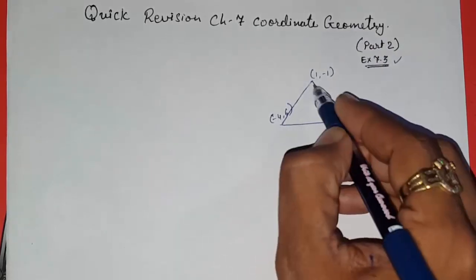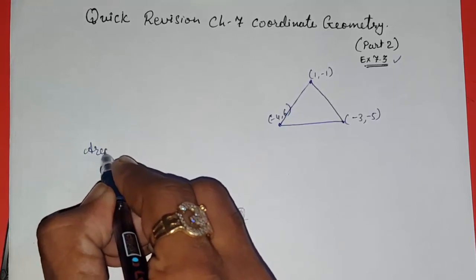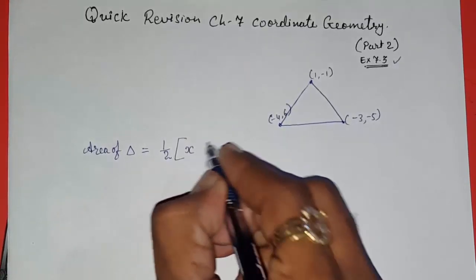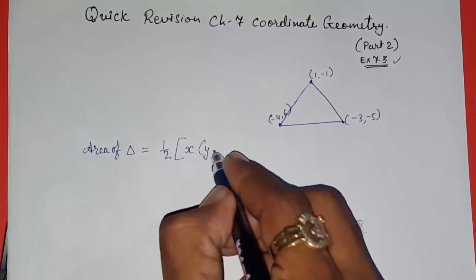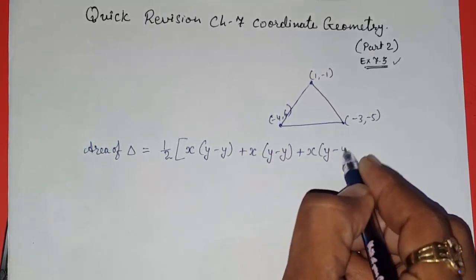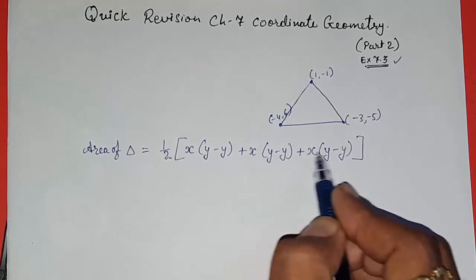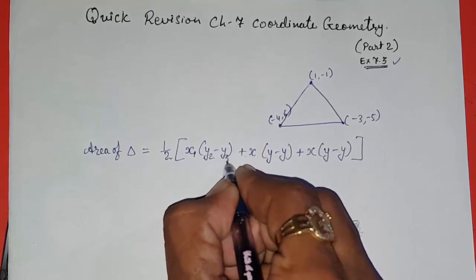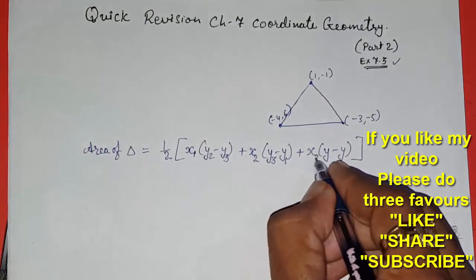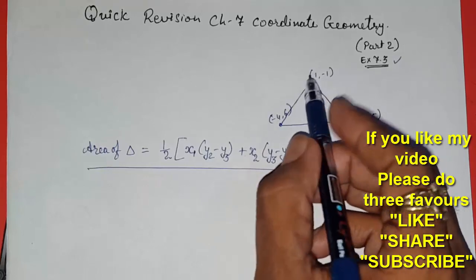Look here — this is a triangle and three coordinates are given to us. If we want to find out the area of this triangle, we can find it directly. The formula is: area of triangle equals half into [x1(y2 - y3) + x2(y3 - y1) + x3(y1 - y2)]. I'm showing you a shortcut to remember this formula: write x, y minus y, plus x, y minus y, plus x, y minus y, and cycle the subscripts 1-2-3, then 2-3-1, then 3-1-2. This is the formula for finding the area of a triangle when three coordinates are given.